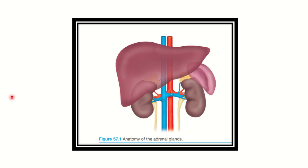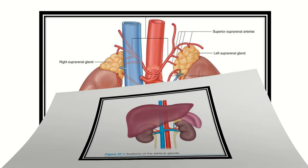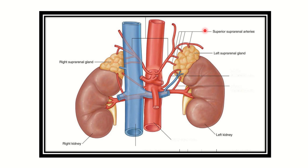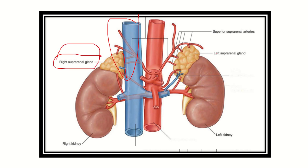In this picture we can see the anterior relations. The right adrenal gland is related anteriorly to the liver. We can also see that the right adrenal gland is closely related to the inferior vena cava. It is very important to remember that the inferior vena cava is closely — medially — related to the right suprarenal gland.